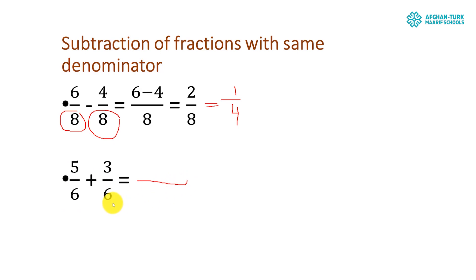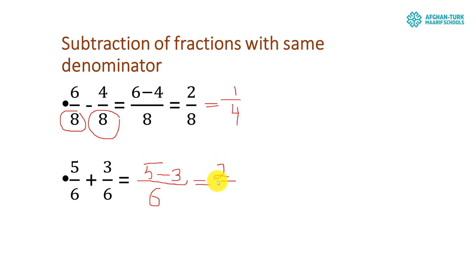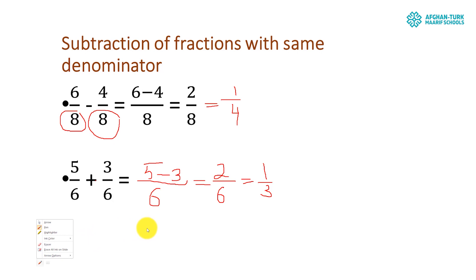Another example: the denominators are the same — 6. So we write 6 as the denominator and subtract the numerators. Here it is subtraction, so 5 minus 3 equals 2, giving us 2 over 6. These two numbers are both in the 2 times table, so we can write it as 1 over 3 in simplest form. Please take note: the sign here is subtraction, not addition.